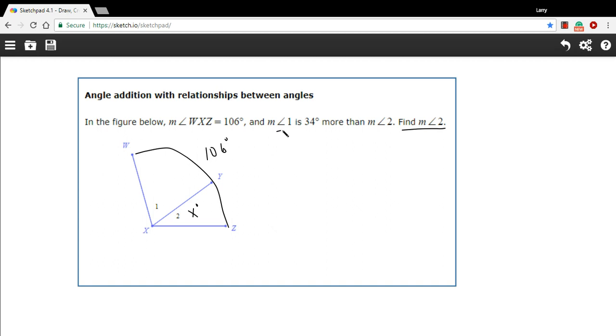Now it's a little easier for me to come up with a way to write what the measure of angle 1 is. It says it's 34 degrees more than the measure of angle 2, so I could call this X plus 34 degrees.